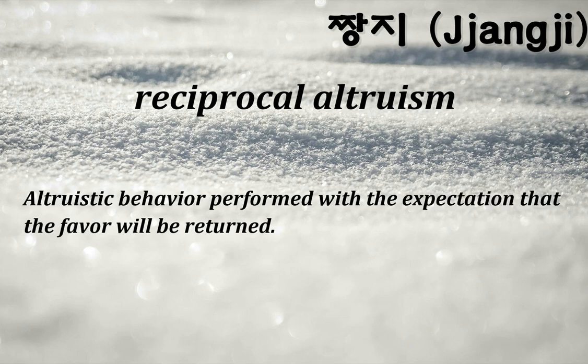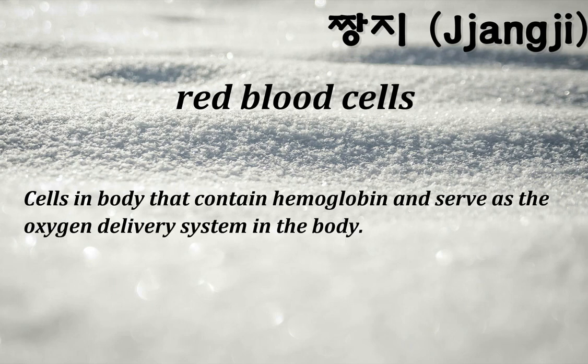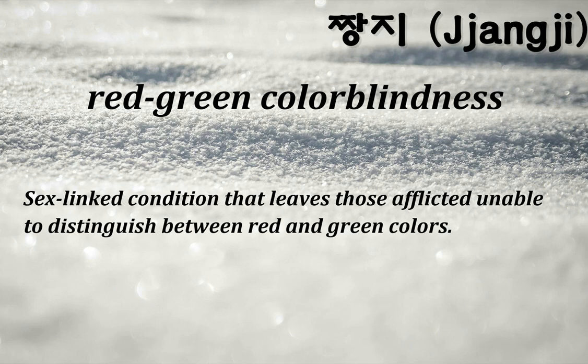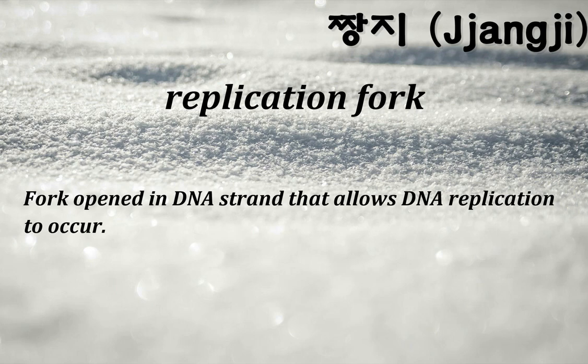Reciprocal altruism: altruistic behavior performed with the expectation that the favor will be returned. Recombinant DNA: DNA that contains pieces from multiple sources. Red blood cells: cells in the body that contain hemoglobin and serve as the oxygen delivery system. Red-green color blindness: sex-linked condition that leaves those afflicted unable to distinguish between red and green colors. Redox reaction: a reduction-oxidation reaction involving the transfer of electrons. Replication fork: fork opened in DNA strand that allows DNA replication to occur.